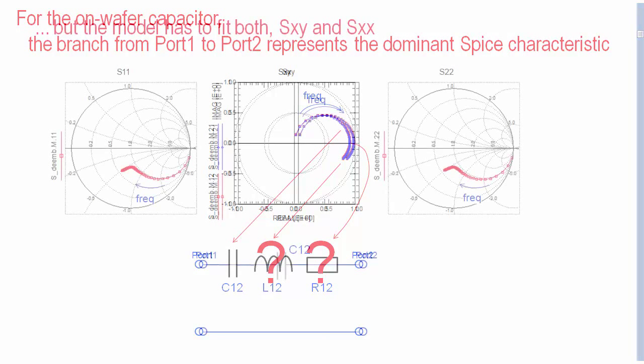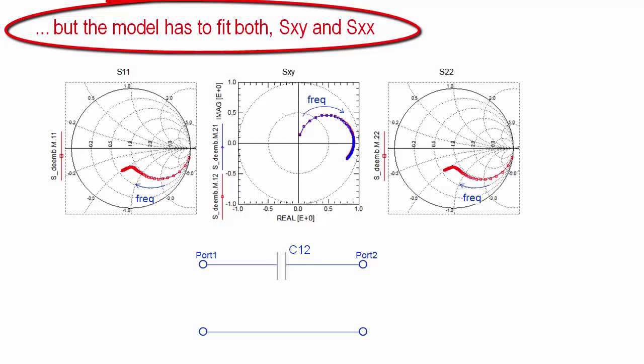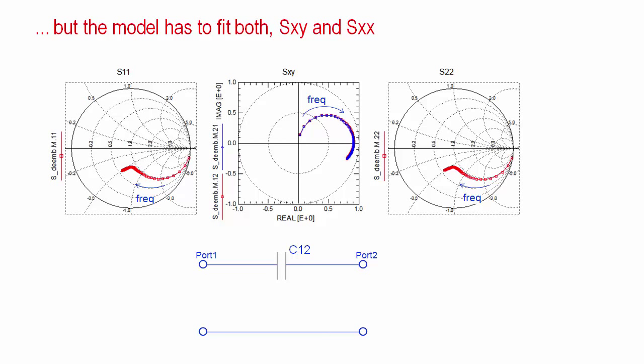We have to fit both the transmission and reflection measurements, what means all four S-parameters together. Inspecting this time the Smith charts of S11 and S32, and again focusing first on the low frequency range, we have a capacitor in series with 50 Ohm. These 50 Ohm are the termination of the opposite port, and the capacitor is our C12.